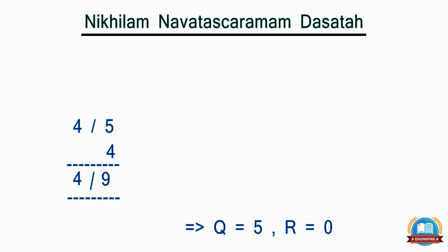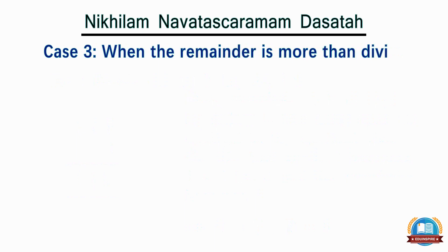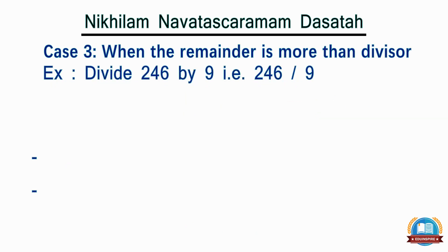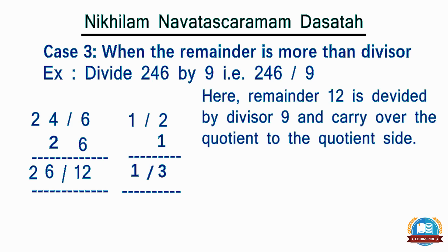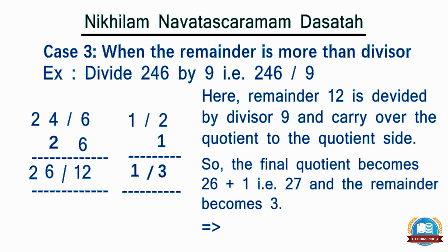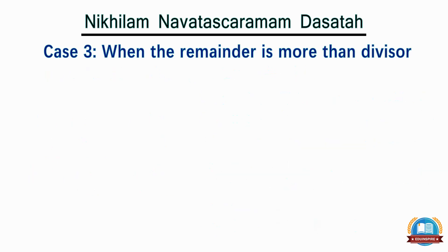Now let's go through the third scenario where the remainder is greater than the divisor. Let's take the example of dividing 246 by 9. Following the steps, we get quotient as 26 and remainder as 12. Since remainder 12 is greater than divisor 9, we divide 12 by 9 in the similar way and get quotient as 1 and remainder as 3. We carry over the quotient, so the final quotient becomes 26 plus 1, that is 27, and the remainder becomes 3.